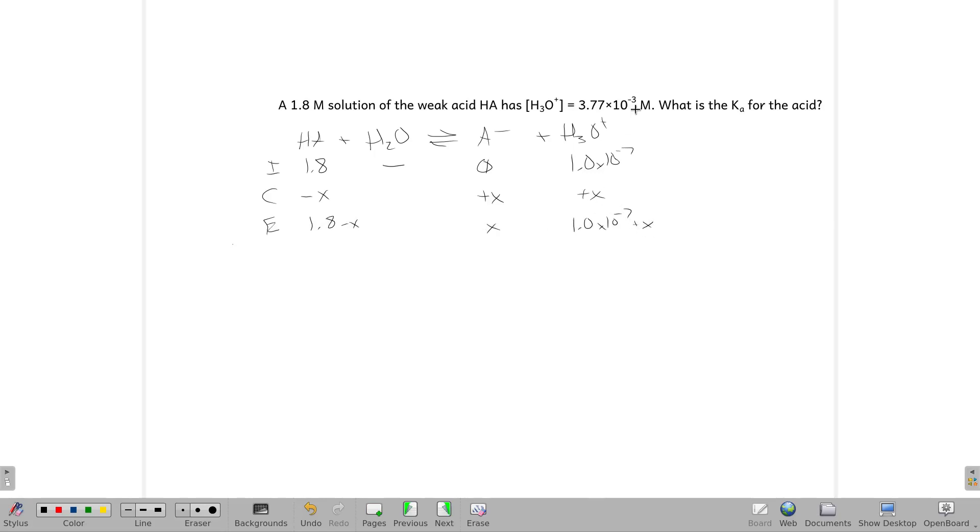Now we know that this X, being as large as it is, I can ignore that. And we also know that this is going to be basically 1.8. So that's our assumptions, just like normal. X and X, and that's just 1.8.